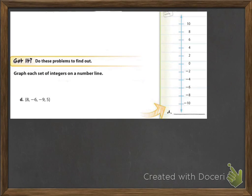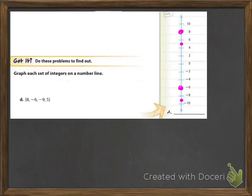Now we're going to see the vertical number line — graph each set of integers on the number line. The integers to graph are positive 8, negative 6, negative 9, and positive 5. Negative 9 was a little tricky because you don't actually see a negative 9, but we know that negative 9 is between negative 8 and negative 10. Positive 5 is also tricky because there's not an actual number on the number line for it, but we know it is just between 4 and 6.